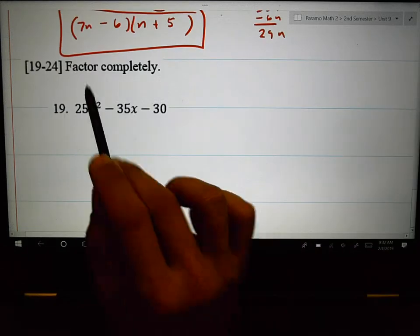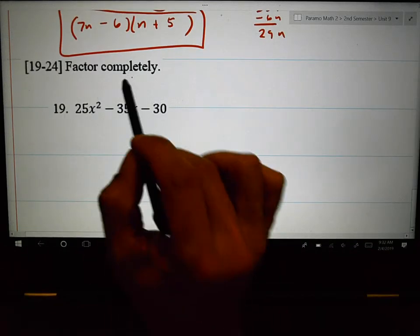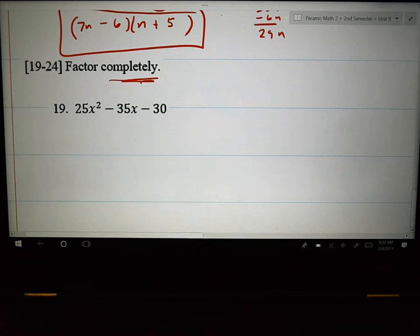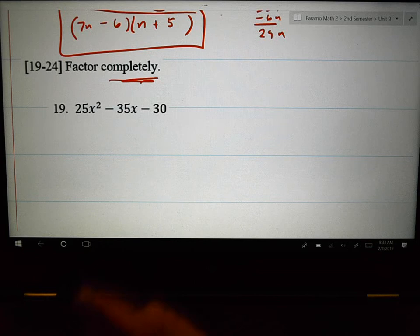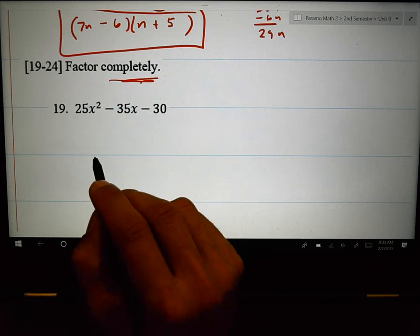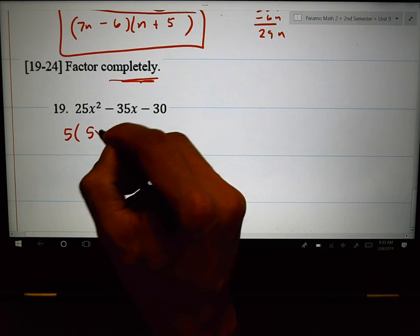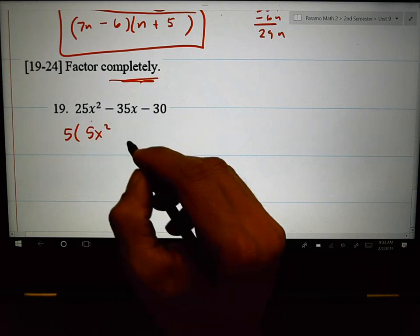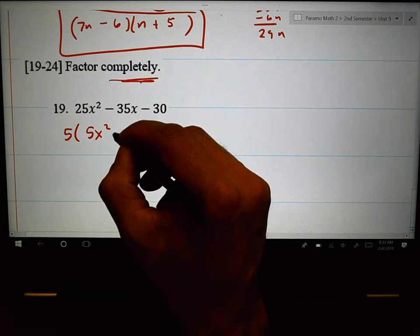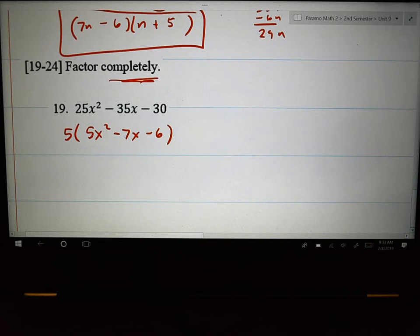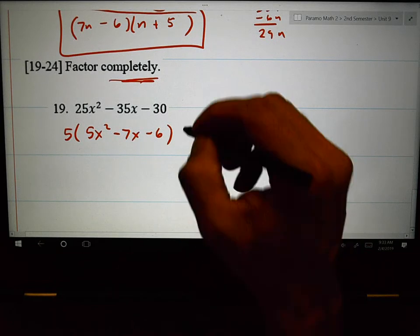Lastly, just like before, when it says factor completely, that word is a key word. It means that you're probably going to use more than one technique. It means, hey, don't forget you could use GCF. You could use difference of squares or you can use this trinomial factoring that we were doing. I see a GCF. I'm pretty sure I can pull out a 5 of all of these. If I pull out a 5, 5 times 5x squared would be 25x squared minus 7x because 5 times 7x would be 35x minus 6. So, I would try GCF first.